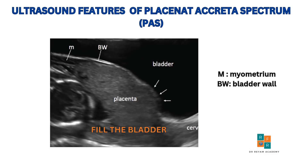To accurately identify the ultrasound features of placenta accreta spectrum, the urinary bladder should be adequately filled, ideally with 200 to 300 ml of fluid. A full bladder helps clearly delineate the lower uterine segment, locate the site of a previous cesarean scar, and assess the position of the placenta in relation to it. If the bladder is empty, it is difficult to evaluate placenta accreta spectrum markers such as bladder wall interruption, placental bulge, and utero-vesical hypervascularity. Proper bladder filling is therefore essential for optimal placenta accreta spectrum assessment.